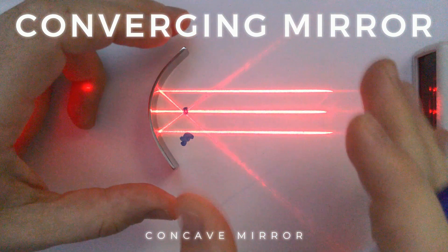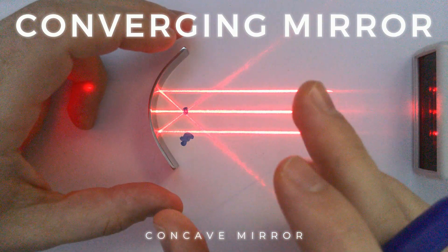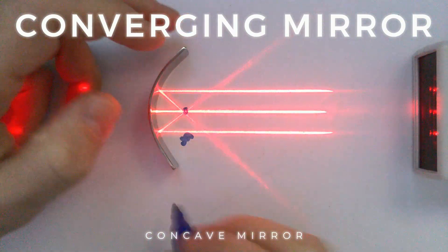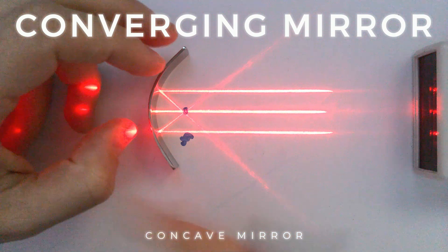So this is a converging because the light rays are coming together. And it is also known as a concave mirror. So concave and converging.